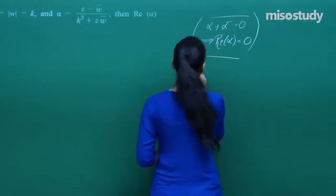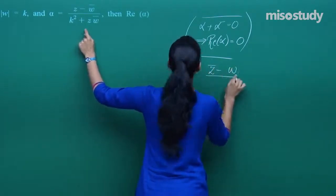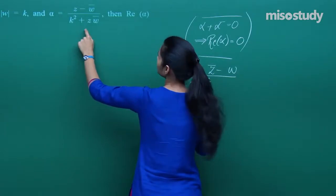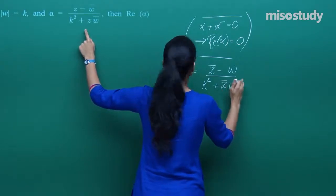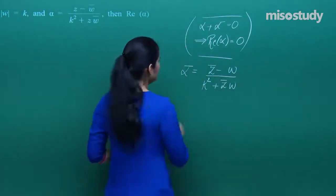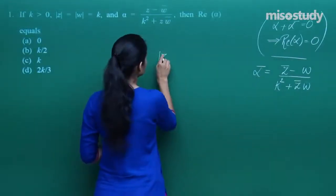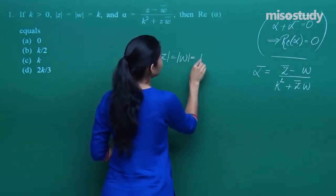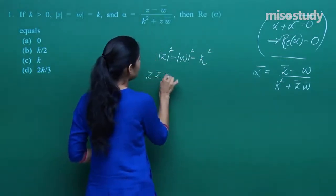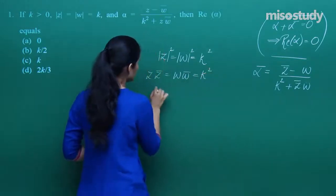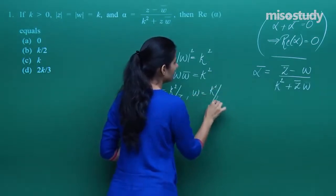Consider alpha-bar: if alpha equals (z minus w-bar)/(k² plus z·w-bar), then alpha-bar equals (z-bar minus w)/(k² plus z-bar·w). Now, since mod z equals mod w equals k, we get mod z² equals mod w² equals k², meaning z·z-bar equals k² and w·w-bar equals k². Therefore z-bar equals k²/z and w equals k²/w-bar.